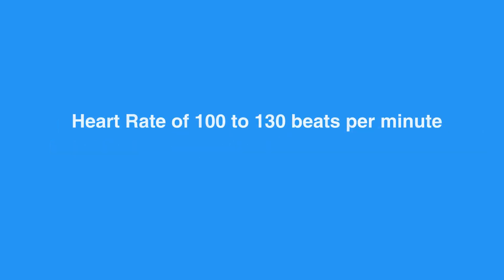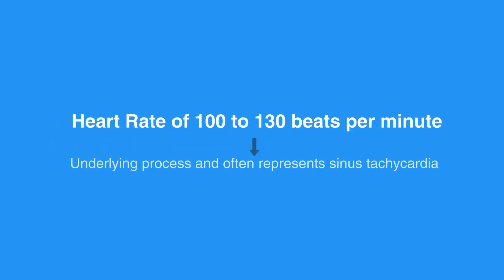A heart rate of 100 to 130 beats per minute is usually the result of an underlying process and often represents sinus tachycardia, in which the goal is to identify and treat the underlying systemic cause.